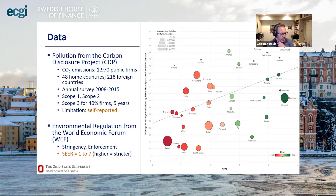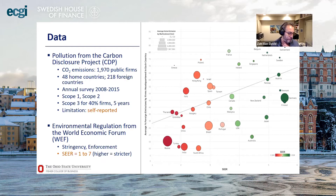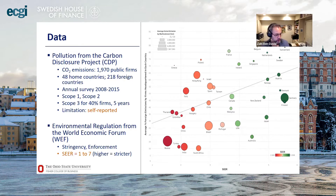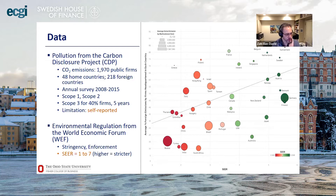Scope three is less standardized — firms seem to include different things sometimes, so results involving scope three carry that caveat. The second key dataset is the Environmental Regulation Index from the World Economic Forum. It has two components: stringency of environmental policies and enforcement. We combine these into a single score, which we call SEER — higher means stricter. The two components are highly correlated and are multiplied together to produce the final score.